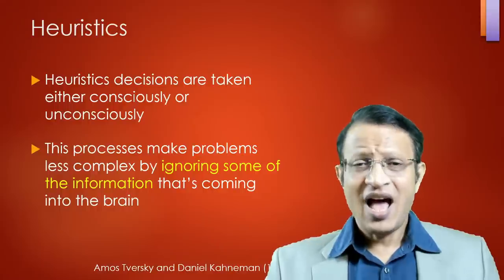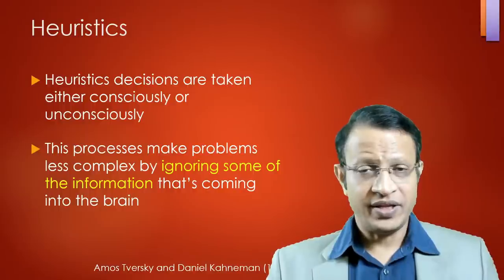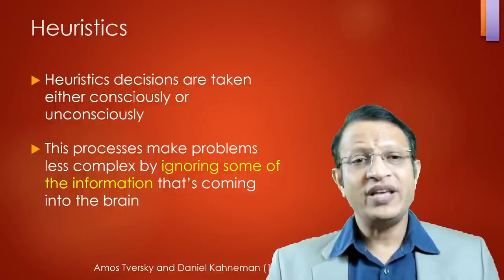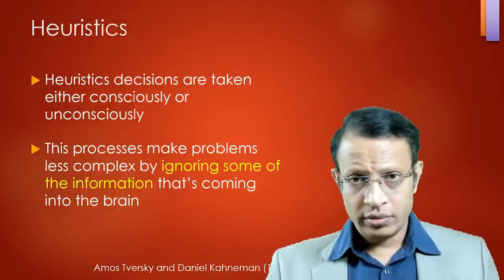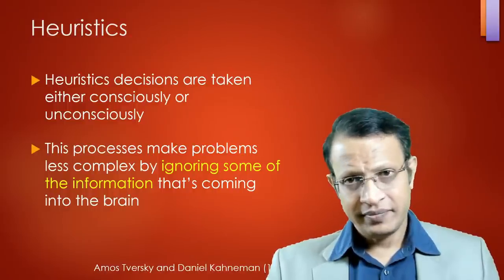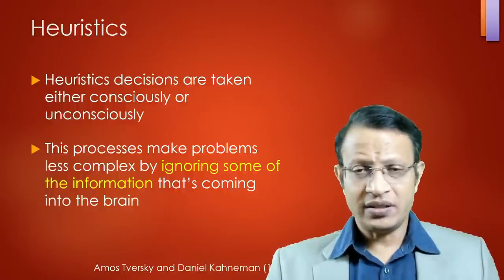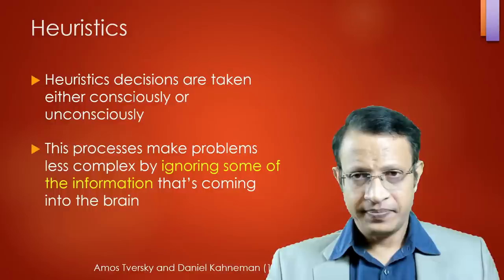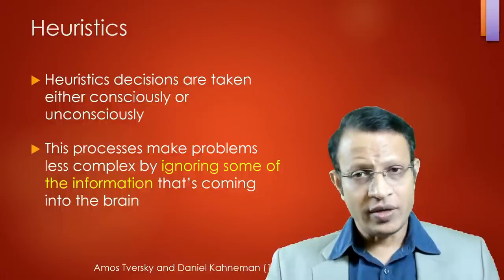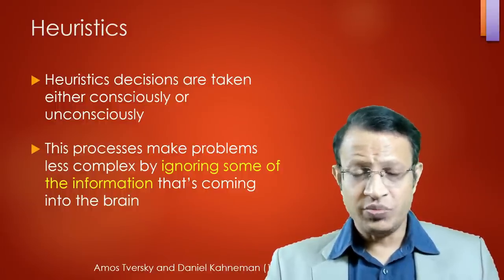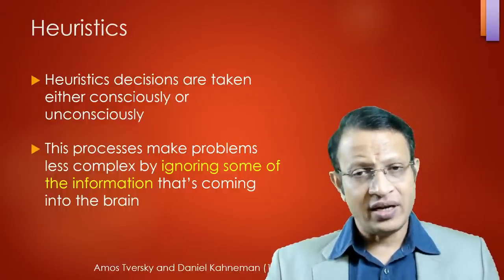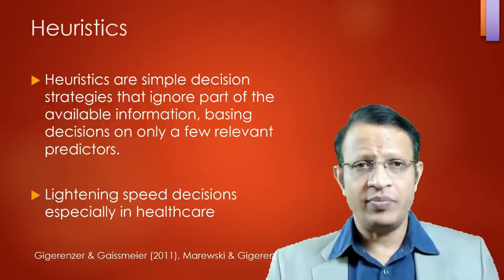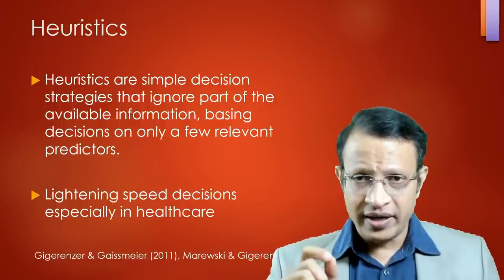Heuristic decision-making is taken either consciously or unconsciously — you are making decisions without even thinking. This process makes the problem less complex by ignoring some information entering the brain. For example, if a patient needs a ventilator and none is available, you use the best available instrument to resuscitate or administer the best available medicine. In the heuristic model, important steps that ideally should be done may be skipped due to resource or time constraints.